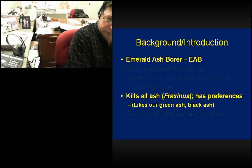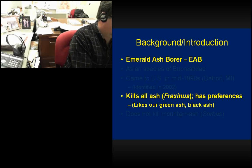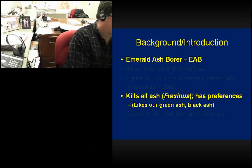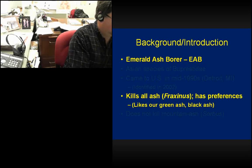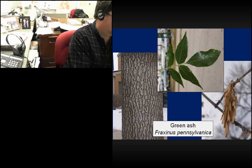EAB kills all ash trees — that is ash in the genus Fraxinus. It has preferences; it loves our green ash and our black ash. There's a species called blue ash that it doesn't do as well on, but we don't have blue ash in North Dakota. The Manchurian ash that we sometimes plant in boulevards has a little bit of resistance to EAB, being that it's an Asian species of ash. Green ash is the most common tree in North Dakota — in boulevards, shelterbelts, and native forests.